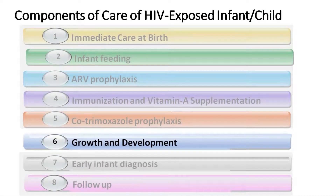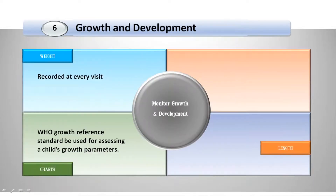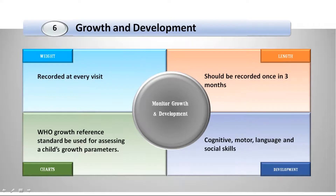Growth and development monitoring: weight should be measured at every visit. Length should be measured and documented at least once every three months. You should follow only WHO reference standards and growth charts. Not only growth — you must also monitor cognitive, motor, language, and social skills: the four domains of developmental milestones. Suggest remedial measures if necessary.